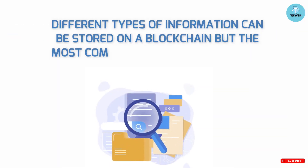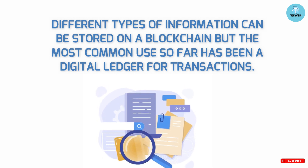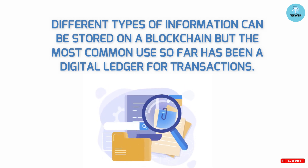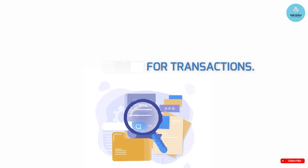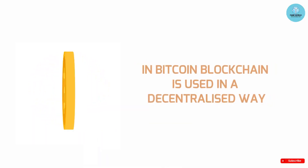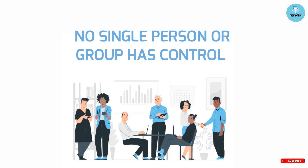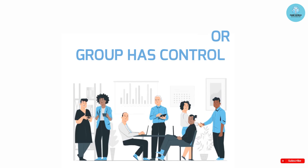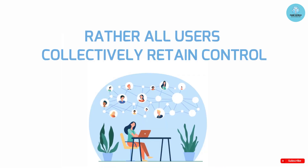Different types of information can be stored on a blockchain, but the most common use so far has been as a digital ledger for transactions. In Bitcoin's case, blockchain is used in a decentralized way so that no single person or group has control. Rather, all users collectively retain control.